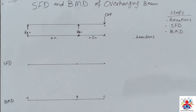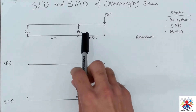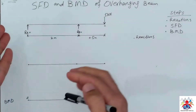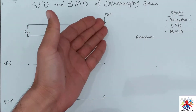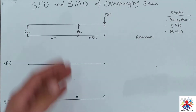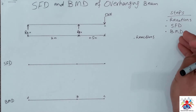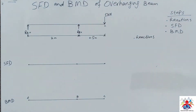Hello and welcome to my YouTube channel. In this video I am going to explain how to draw shear force and bending moment diagram of an overhanging beam. An overhanging beam has one part out of the reaction. As you can see in the diagram, we have reactions at RA and RB, and we have point C which is out of reaction B. We have three steps to follow: reactions, shear force diagram, and bending moment diagram.